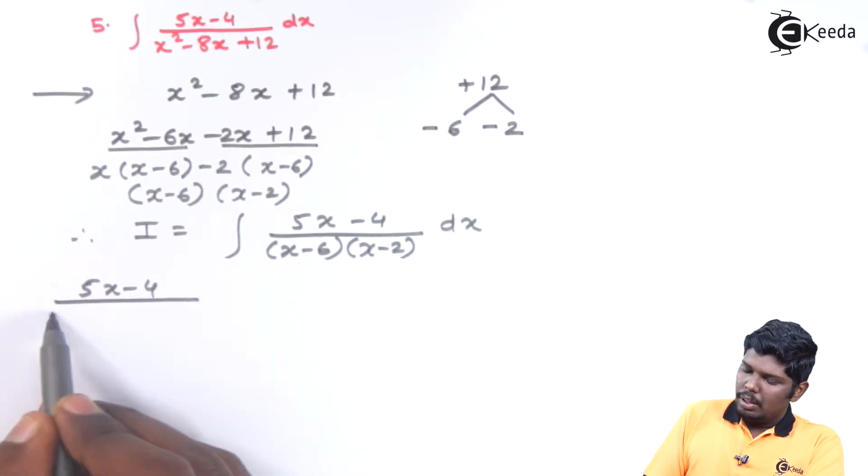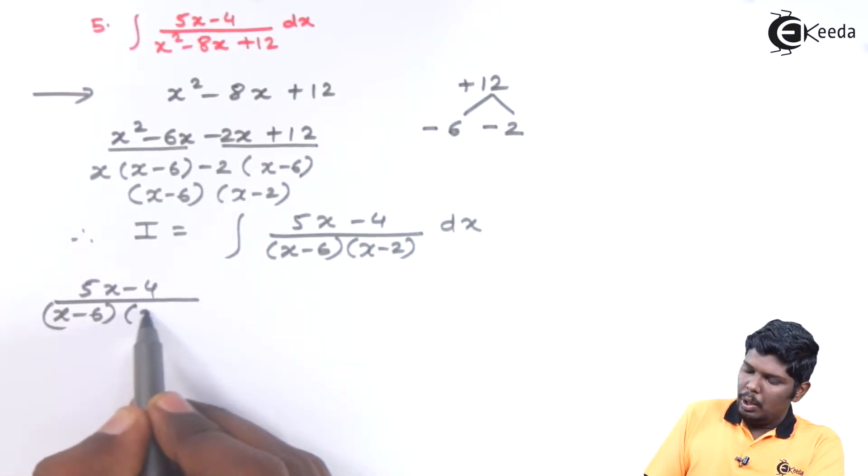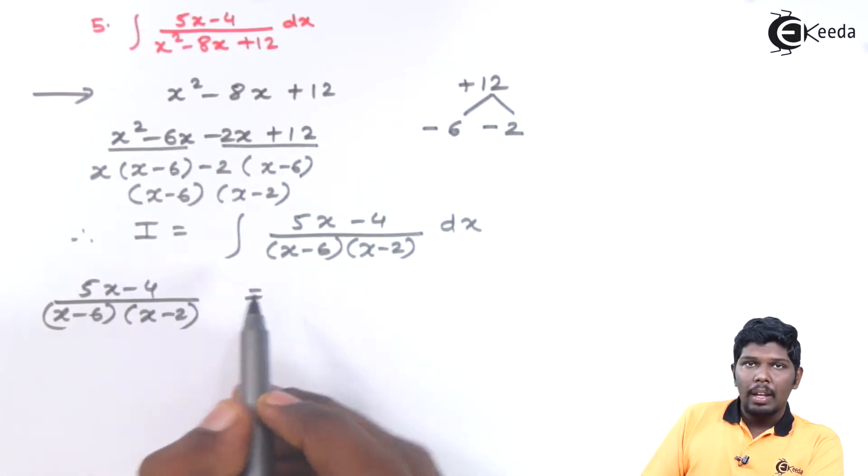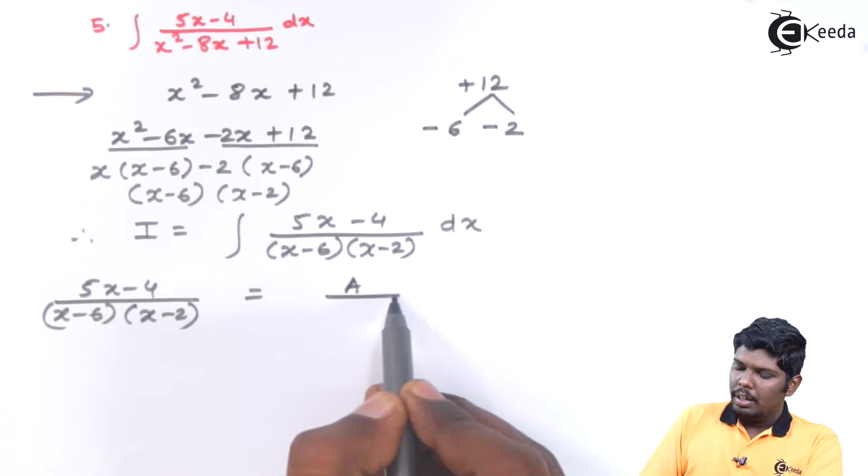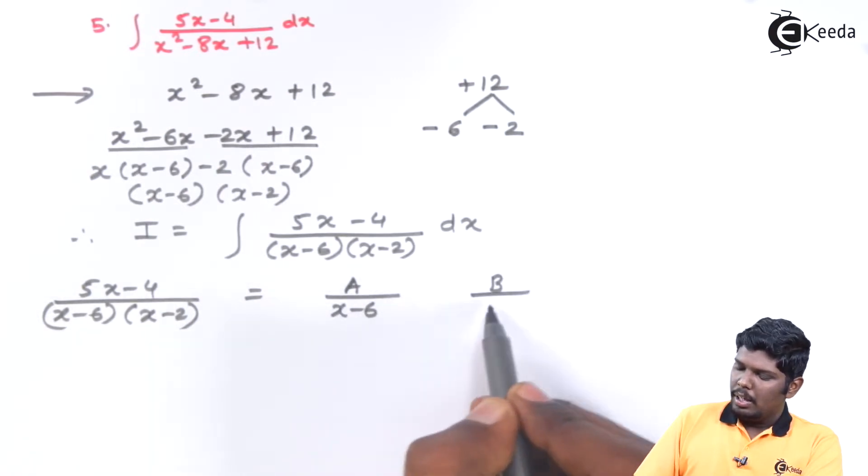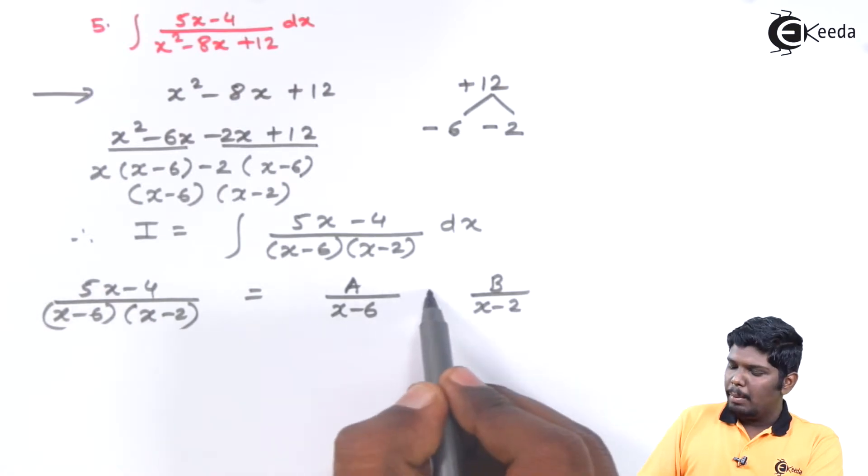5x minus 4 upon x minus 6 into x minus 2. We have 2x in the denominator. Therefore 2 constants, a upon x minus 6 and b upon x minus 2 separated by a positive sign.